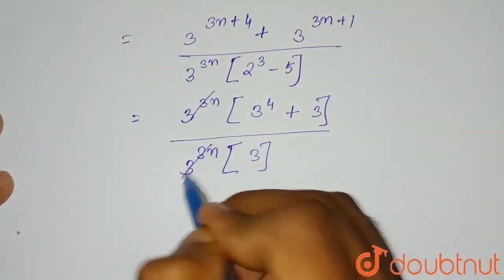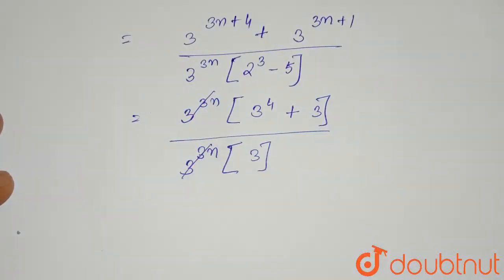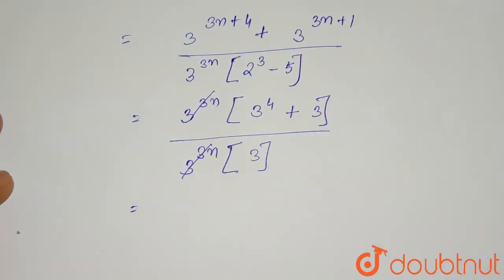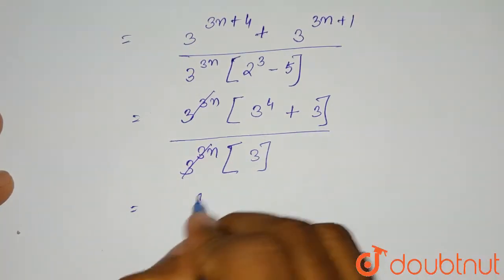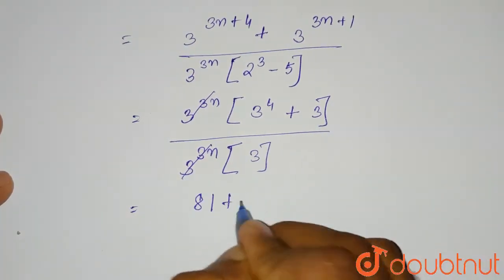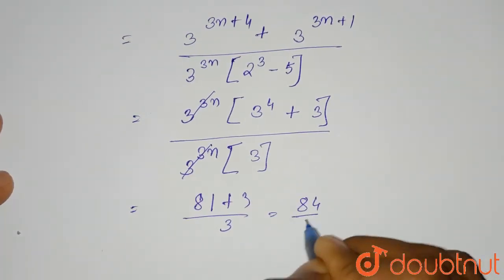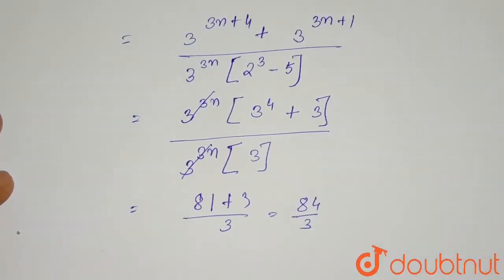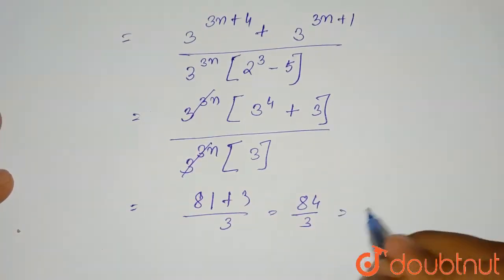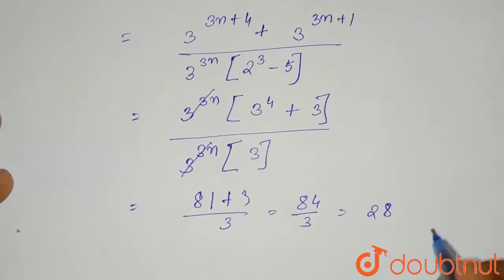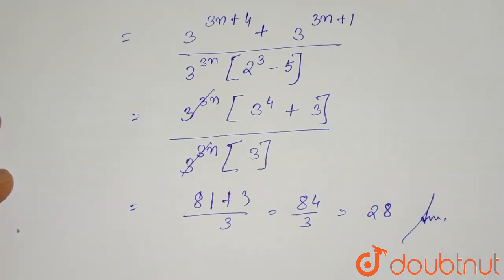So the 3 to the power 3n terms cancel. Ultimately, the value for 3 to the power 4 is 81, so we get 81 plus 3 divided by 3, which is 84 divided by 3, which gives us 28. So this is the required solution for this question.